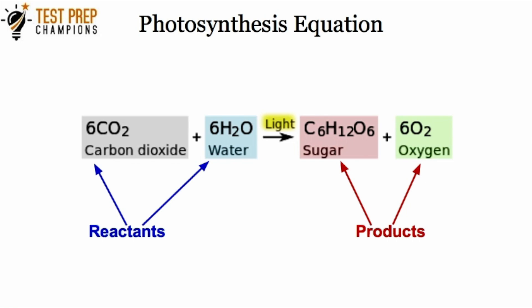Getting back to the photosynthesis equation, let's break down the chemistry. Think of the arrow in the middle like an equal sign in math. Everything on the left-hand side — carbon dioxide and water — we call the reactants. Everything on the right-hand side — sugar or glucose and oxygen — we call the products.